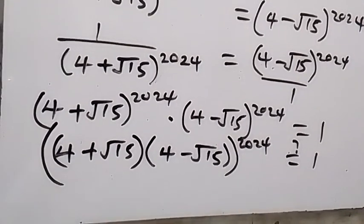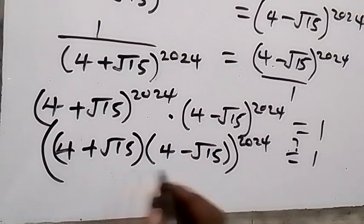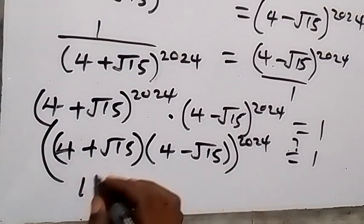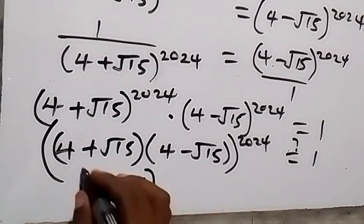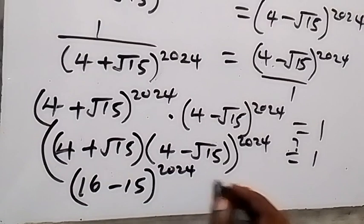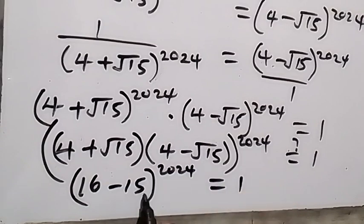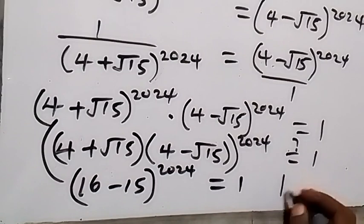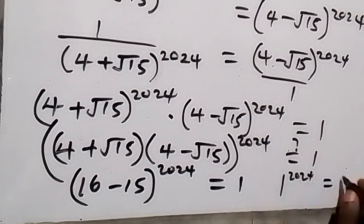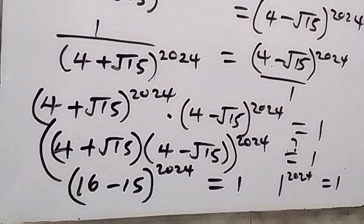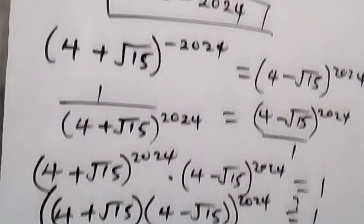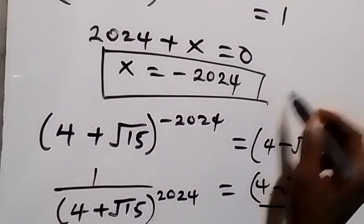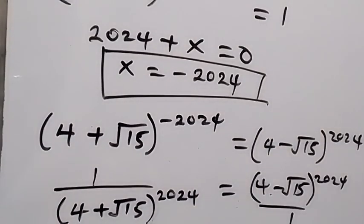We again have conjugates, so this is 4 squared minus 15 squared, which is 16 minus 15 raised to power 2024, which equals 1. And 16 minus 15 is 1, so 1 raised to power 2024 equals 1 — confirmed. Therefore the value of x is minus 2024. Thank you for watching; don't forget to like and subscribe to this channel for more videos. See you in the next class, bye for now.